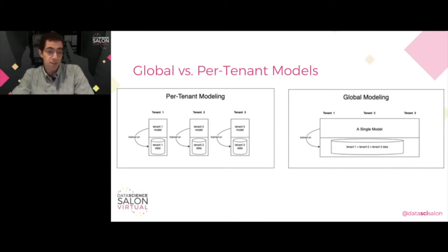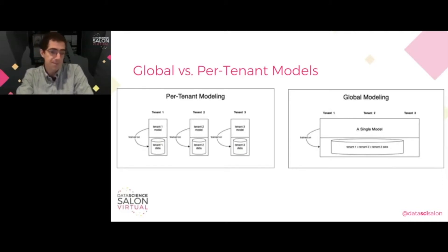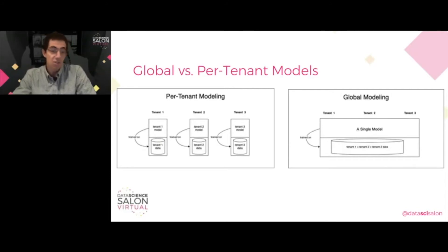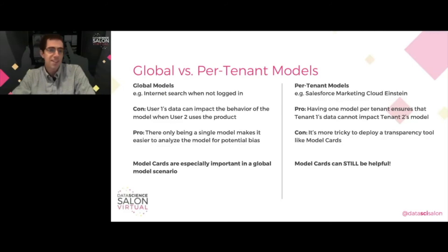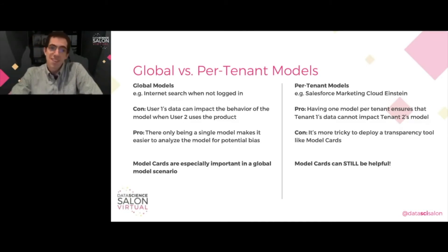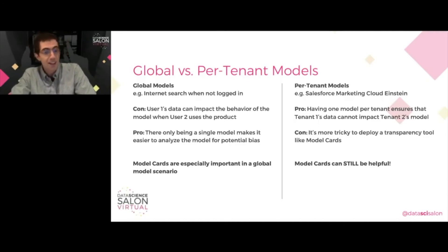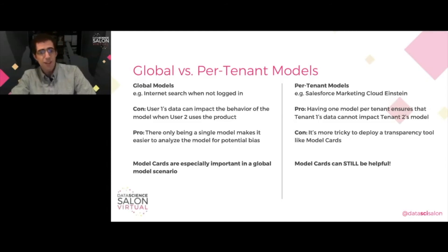A global model, like what you see with Google or Facebook most of the time, lets data from all tenants or users impact the behavior of a single model that all tenants use. Each approach has its pros and cons. The original use case of model cards was aimed precisely at companies that deploy global models. The problem they are trying to solve is an inherent, really unavoidable side effect of the global model, where a tenant in an underrepresented minority of tenants in the training data sees behavior that is irrelevant or harmful to them, because the behavior of the model is largely derived from training data that represents a majority.